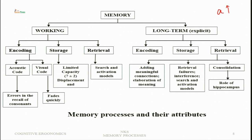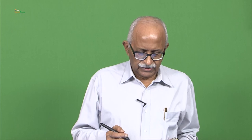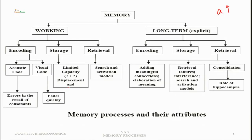The storage capacity of working memory is limited — it can retain up to 7 items, varying by individual (7±2), known as the magic number. Miller showed through many experiments that the human mind has a limited comprehension span, and the amount of information that can be retained is up to 7 items, equivalent to about 2.6 to 7 bits. Information is generally lost through displacement and decay.